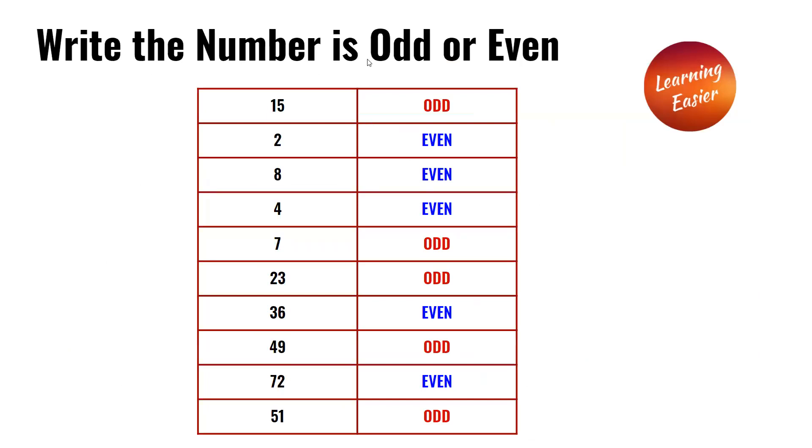Write the number is odd or even. 15 is odd. 2 is even. 8 is even. 4 is even. 7 is odd. 23 is odd.